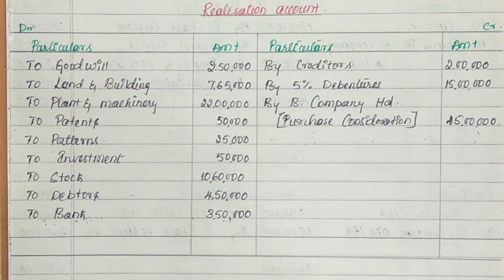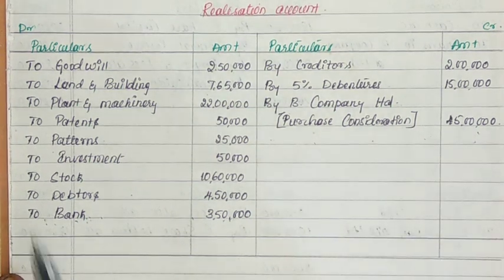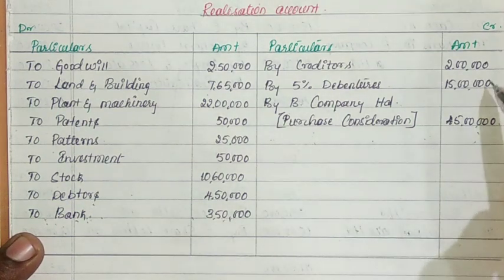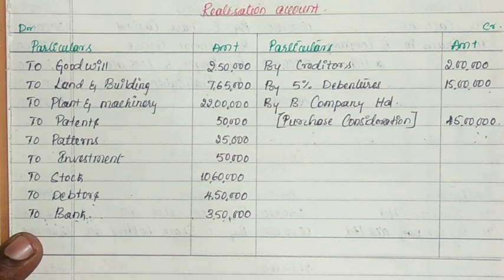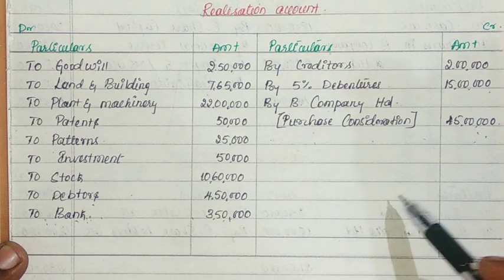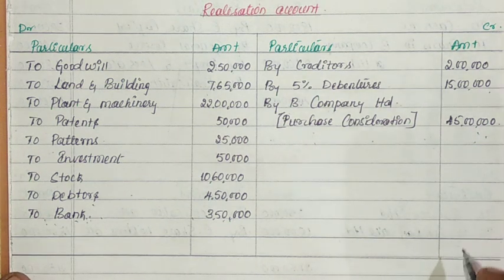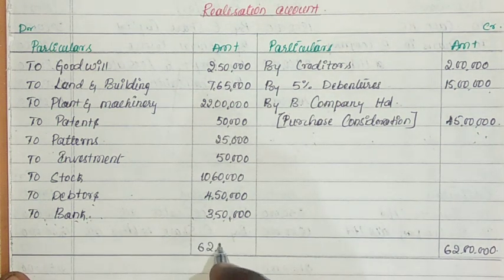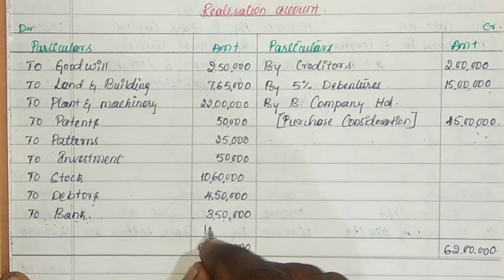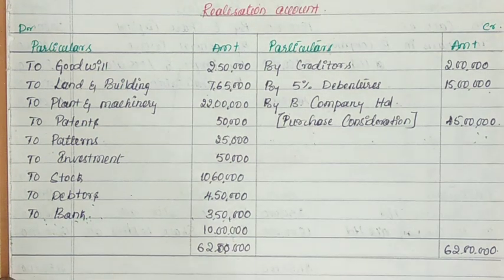Preparation of the realization account: all the assets are entered on the debit side, along with realization expenses and amalgamation expenses. On the credit side: business purchase account, outside liabilities, and the PC amount. The credit side totals 62 lakhs. The debit side totals 52 lakhs. The difference is 10 lakhs, which is a profit. This realization profit is transferred to equity shareholders' account. If you get a credit balance on the debit side, it would be a realization loss.